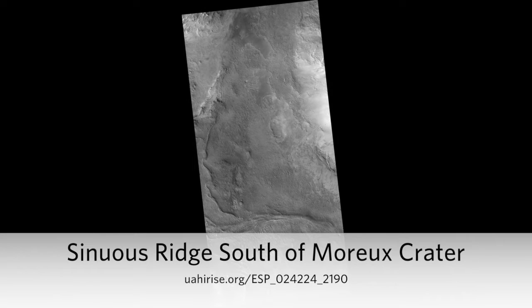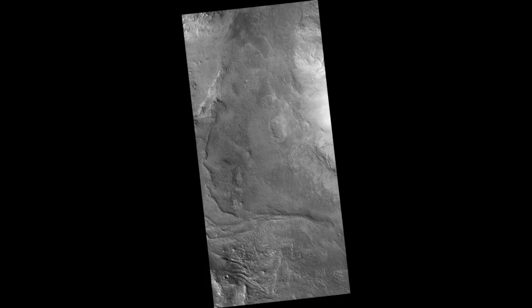Sinuous Ridge South of Moreau Crater. This observation shows a sinuous ridge that may be an inverted stream. Streams can be inverted, becoming ridges, if they are made of stronger material than their surroundings.